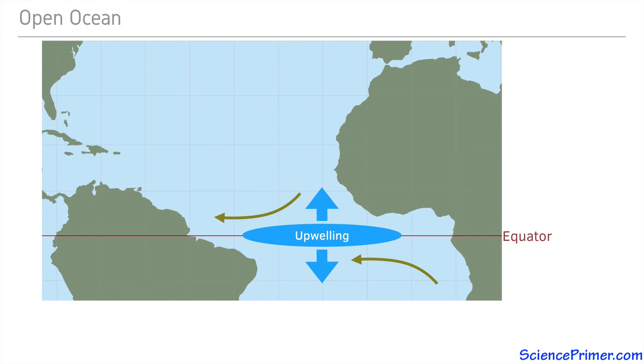In mid-latitudes around 30 degrees north and south, where prevailing winds transition from easterly to westerly, water piles up as the easterly and westerly winds drive surface currents towards each other. This convergence causes downwelling.